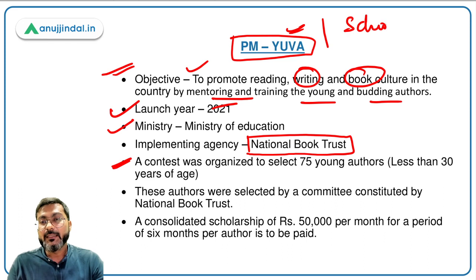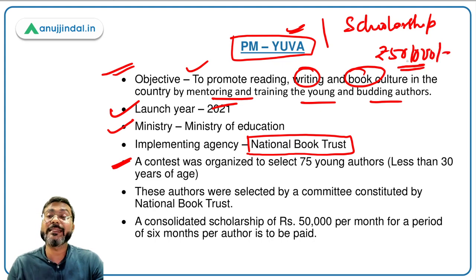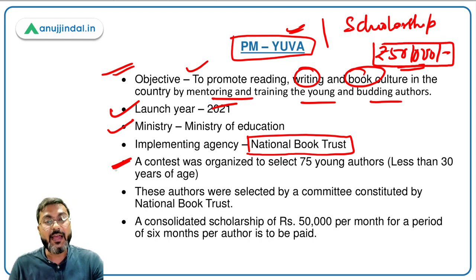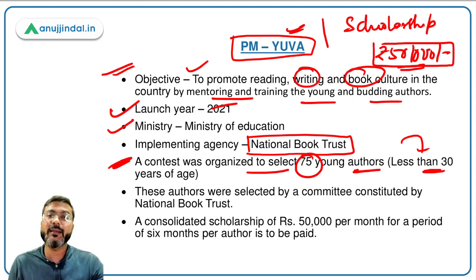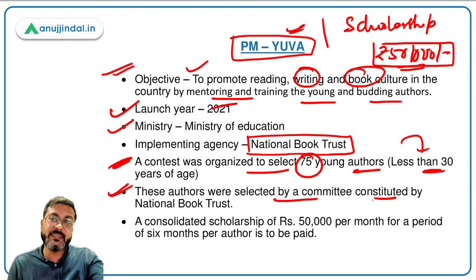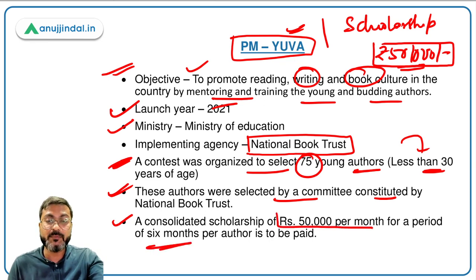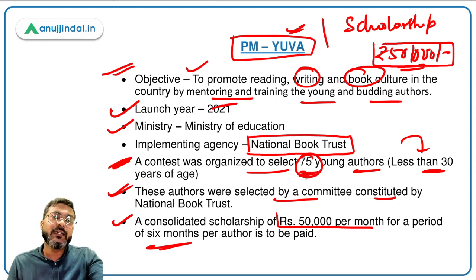Under PM YUVA, the government will provide a scholarship amount of Rs. 50,000 to selected authors. These authors were selected through a contest organized to select 75 young authors. The eligible age for beneficiaries should be less than 30 years. A consolidated scholarship of Rs. 50,000 per month for a period of six months per author is to be paid. The 75 figure is linked to the celebration of Azadi Ka Amrit Mahotsav.